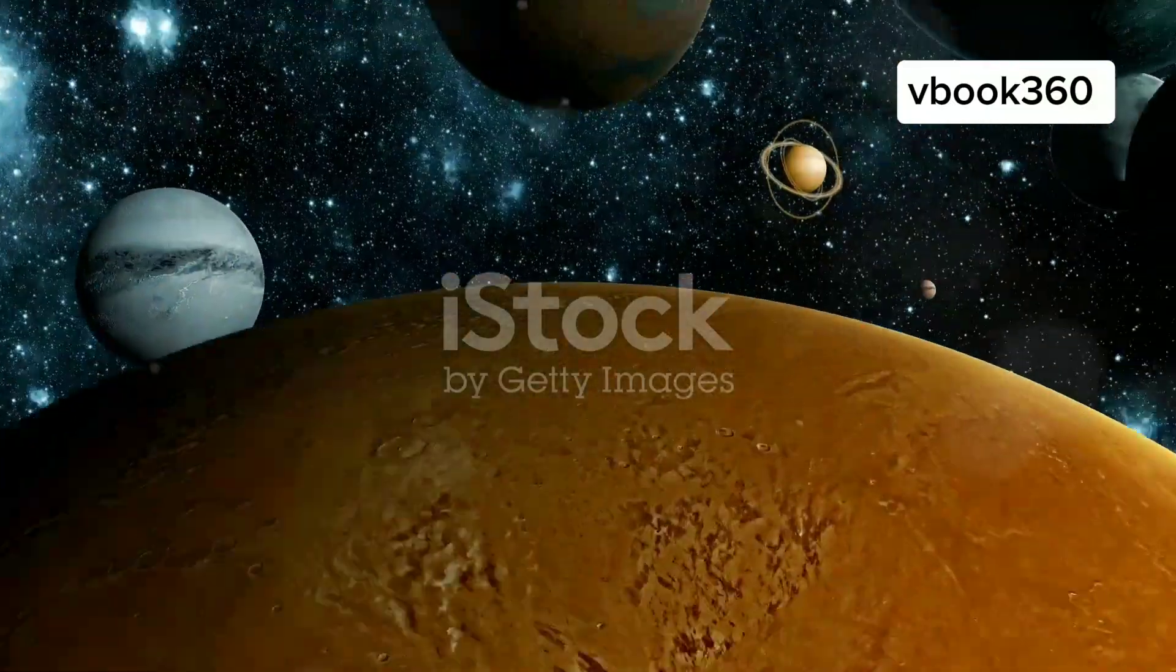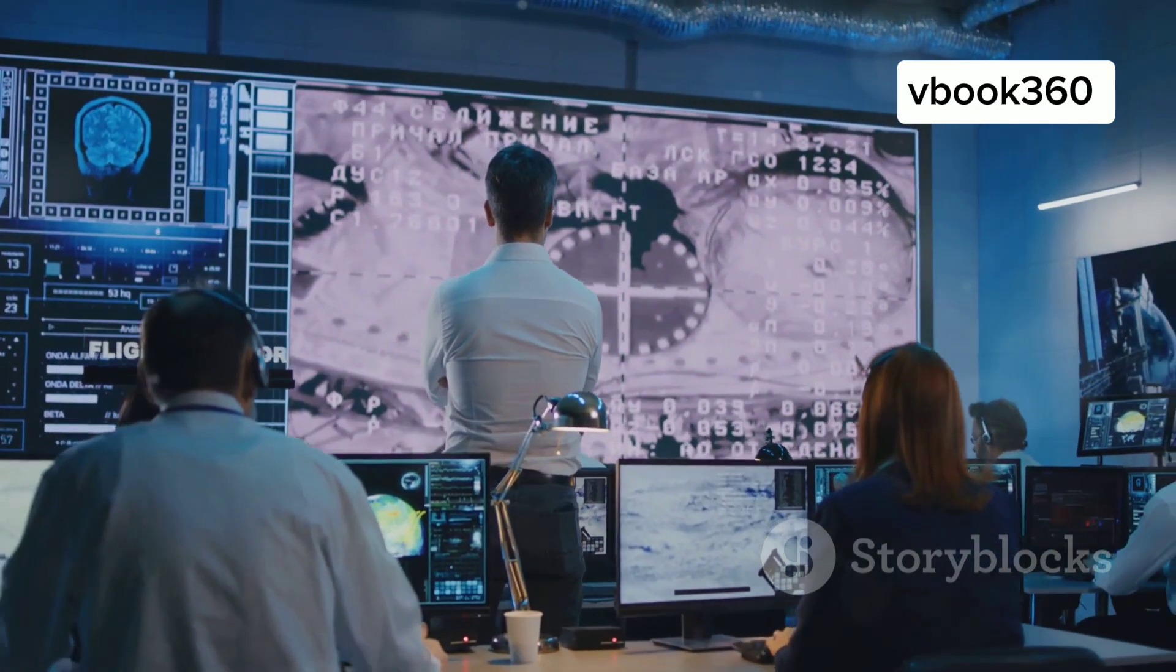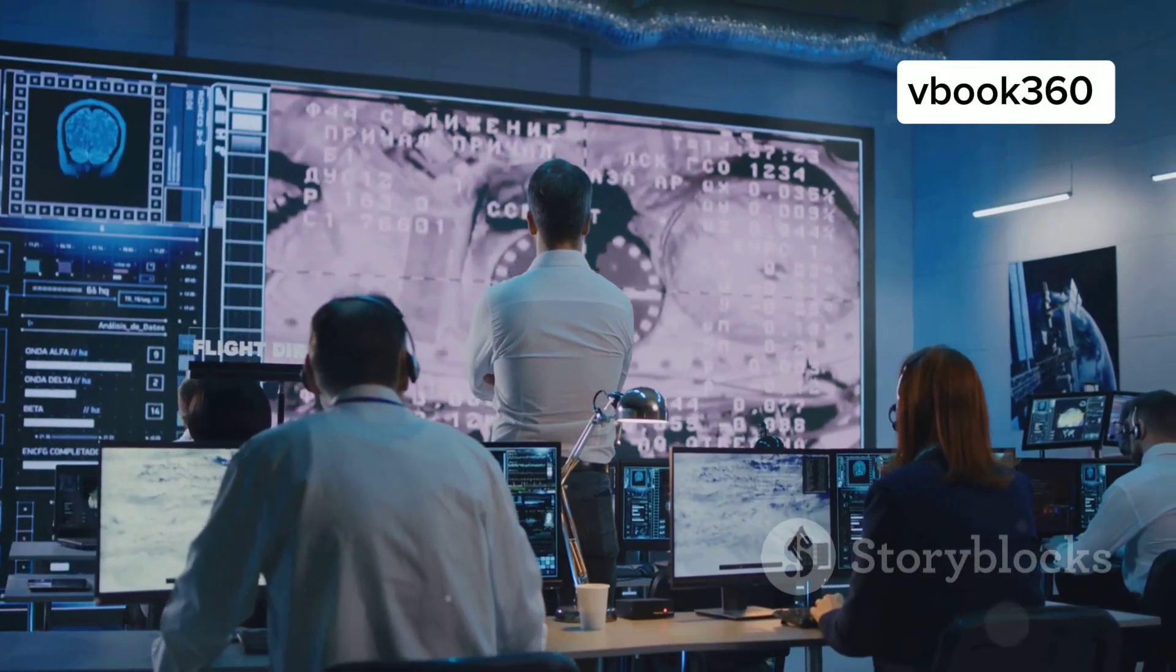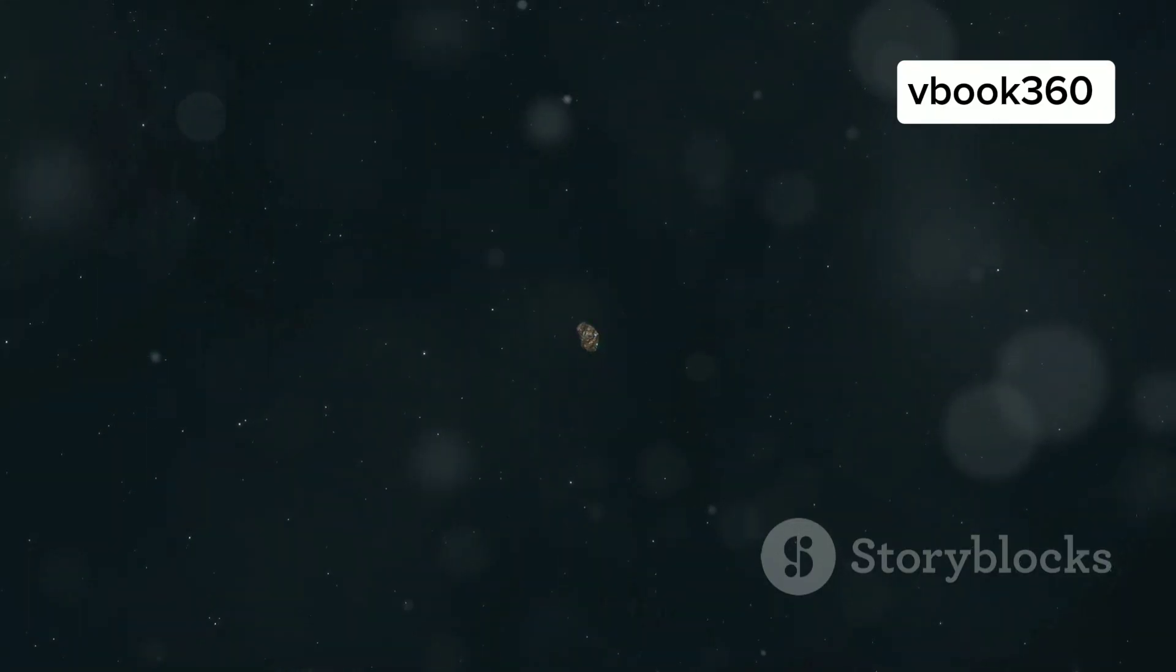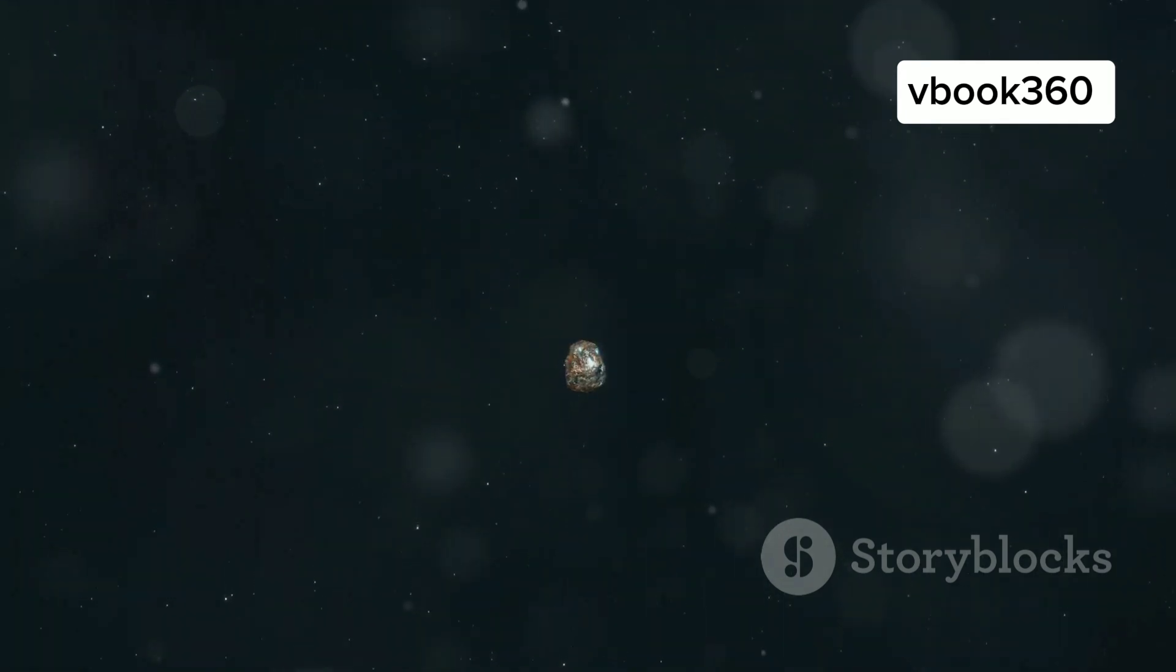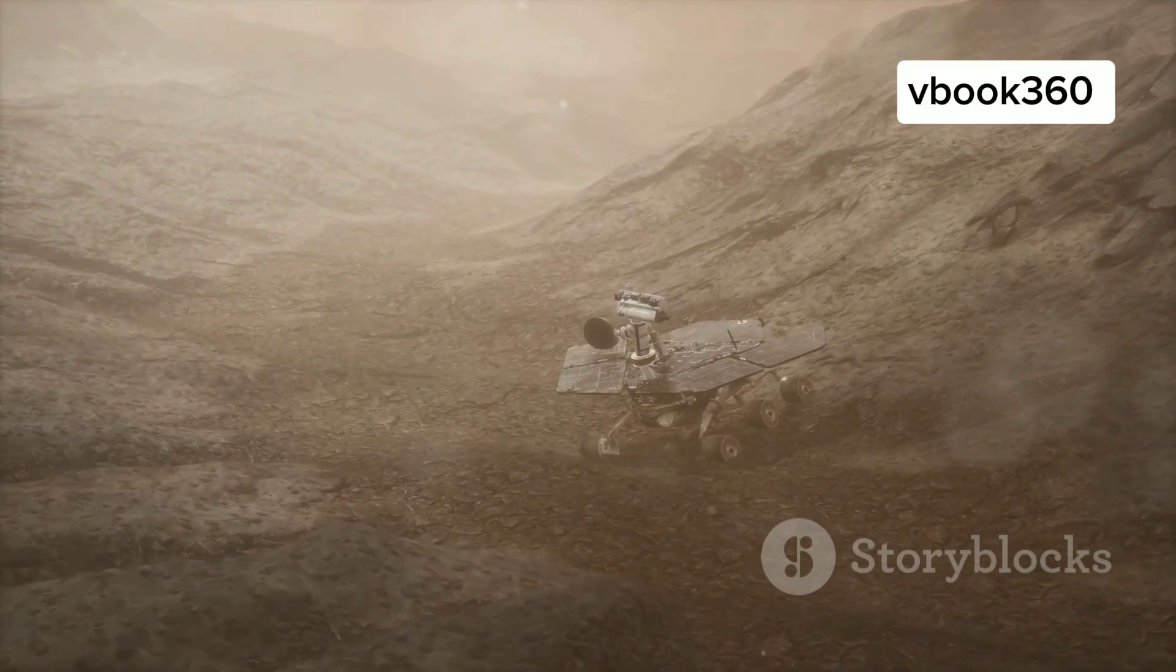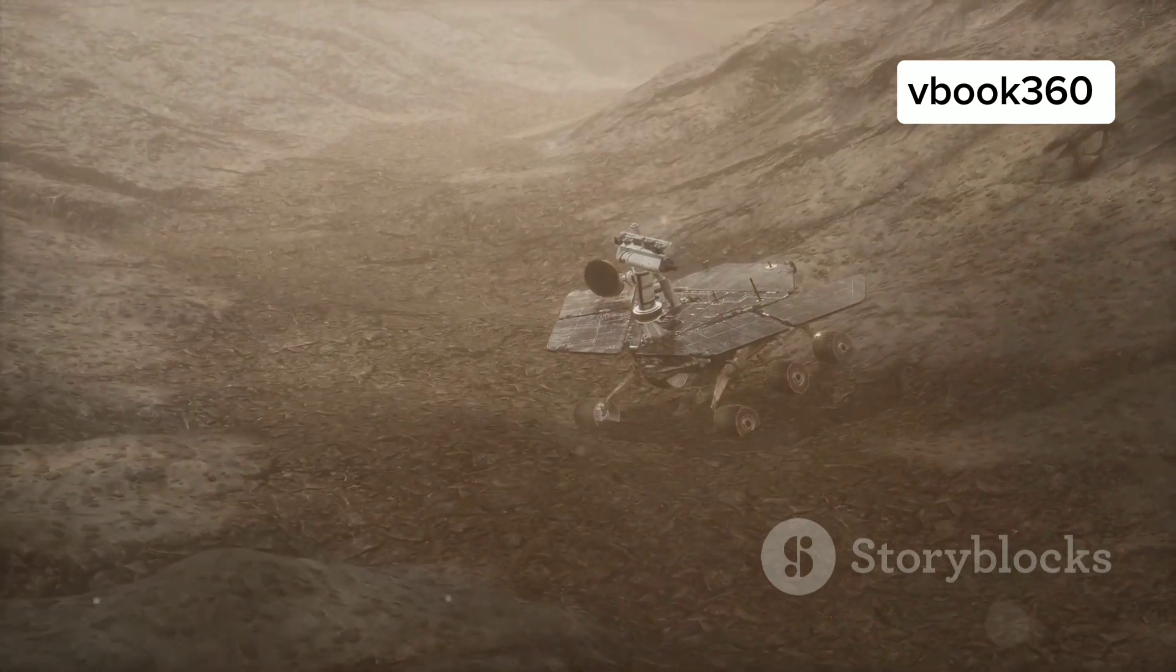What do we actually know about Earth 2.0? While we're still in the early stages of observation, scientists have pieced together some intriguing details. Earth 2.0 is slightly larger than our own planet, belonging to a class known as Super-Earths. Its composition remains a mystery, but it could be a rocky world like ours, perhaps with continents and oceans.